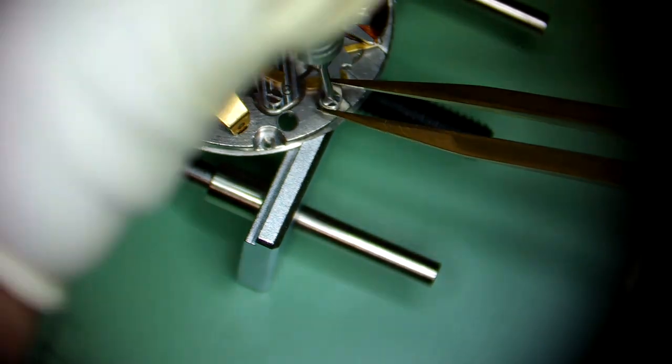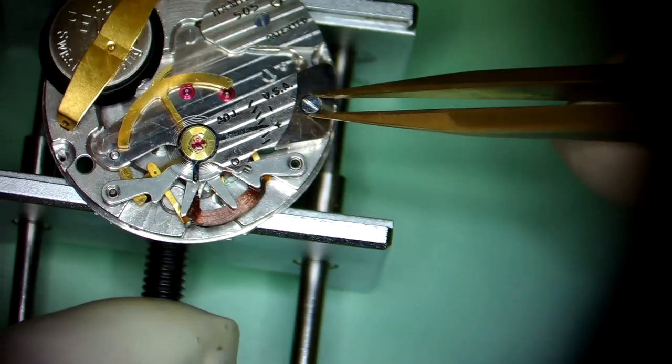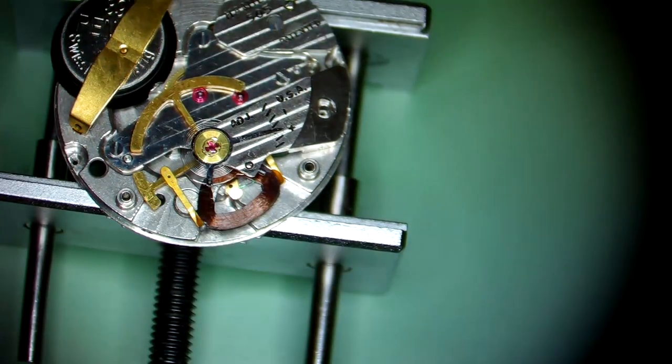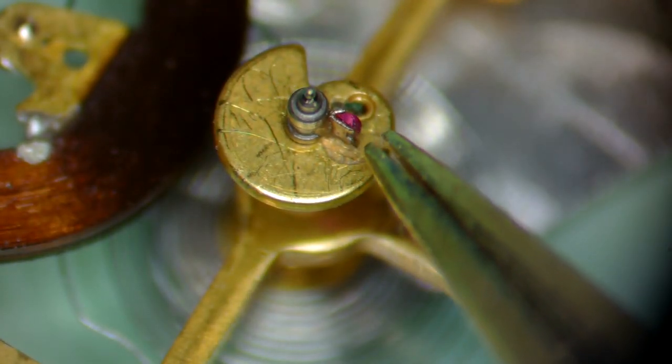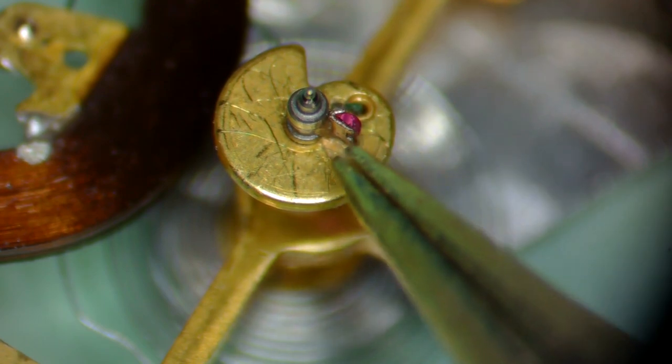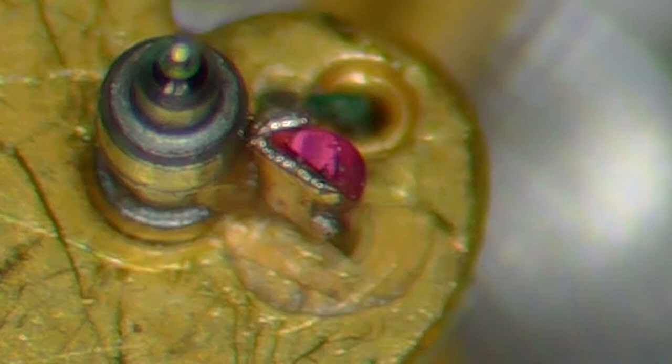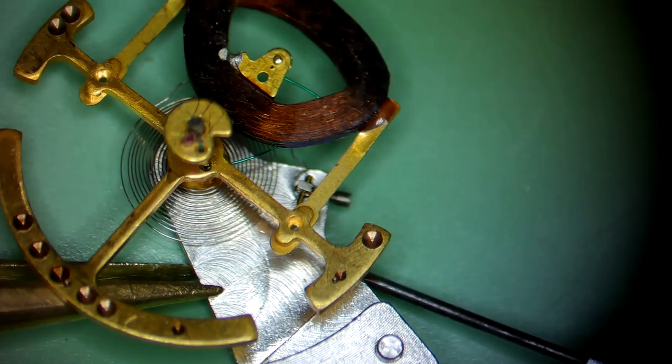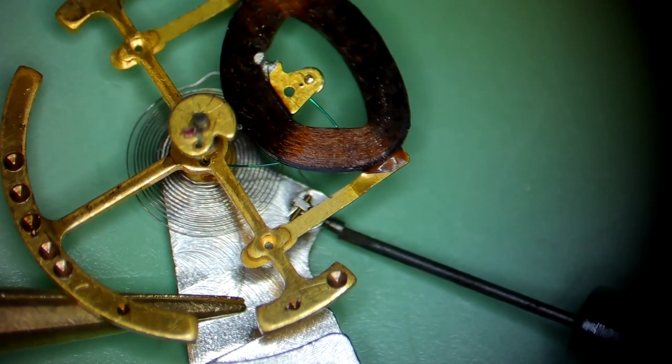So as feared, we have the classic Hamilton electric problem. That contact pin is worn out. Right there is the classic issue with Hamilton 505s. That is the on-off area, and it burns out over time because it's literally sparking every time it makes a contact.